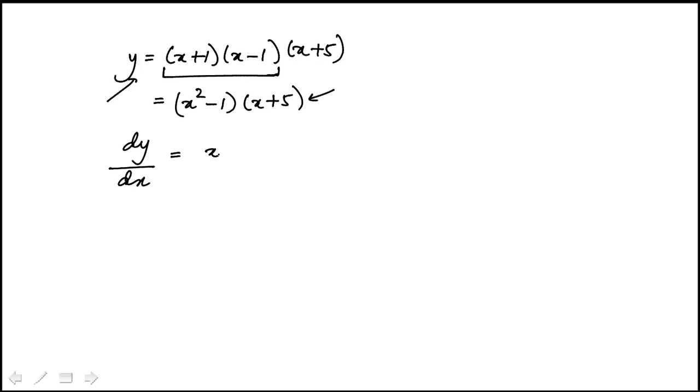it's going to be x squared minus 1 times the derivative of that with respect to x, which is just 1, and then it's x plus 5, and then this d over dx, x squared minus 1 is just 2x.